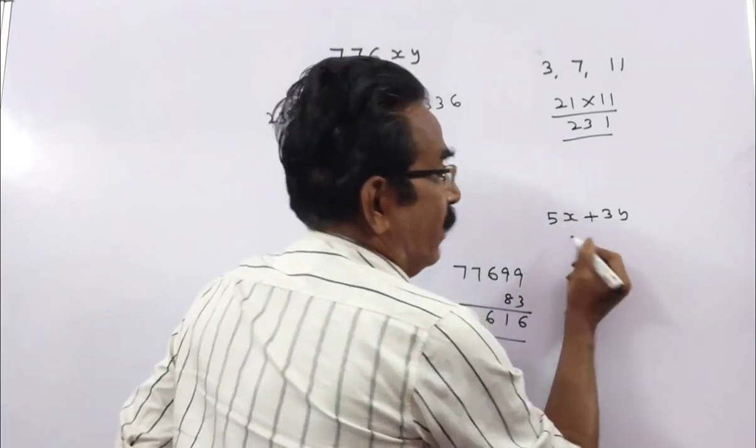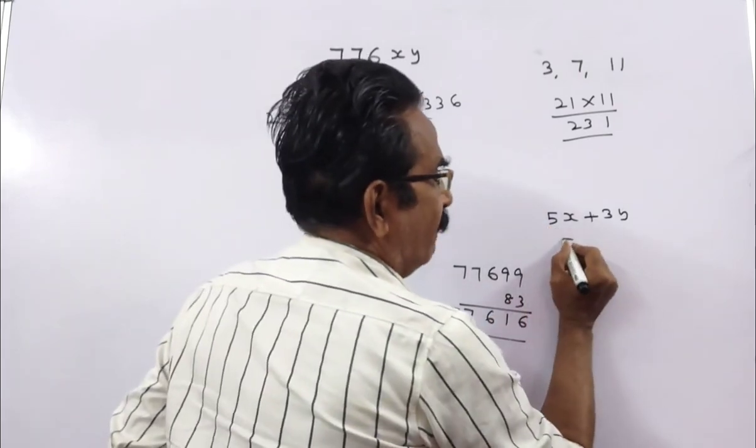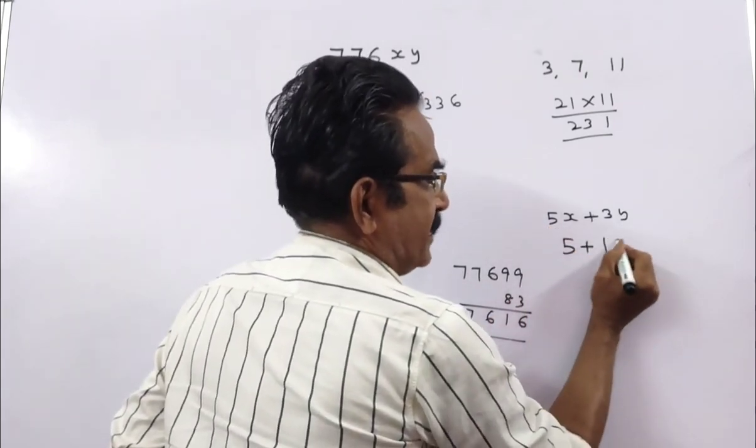So we have to find the value of 5X plus 3Y. 5 into 1 is 5, plus 3 into 6 is 18.